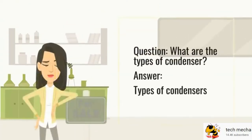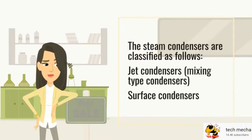What are the types of condensers? Steam condensers are classified as follows: jet condensers, mixing type condensers, surface condensers, and non-mixing type condensers.